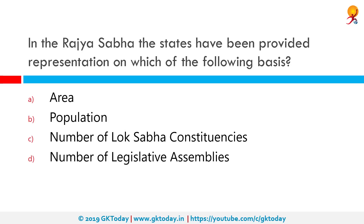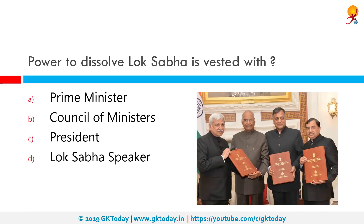In the Rajya Sabha, the states have been provided representation on which of the following basis? They are provided representation on the basis of population. Article 80 of the Constitution lays down the maximum strength of Rajya Sabha as 250, out of which 12 members are nominated by the President and 238 are representatives of states and union territories. Currently the strength of Rajya Sabha is 245, out of which 233 are representatives of states and union territories of Delhi and Pondicherry, and 12 are nominated by the President.